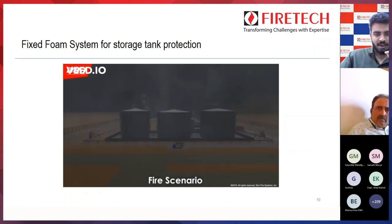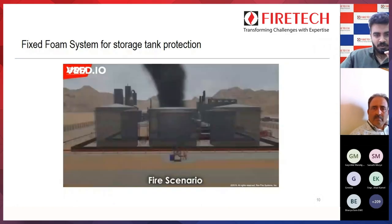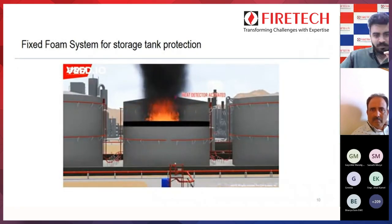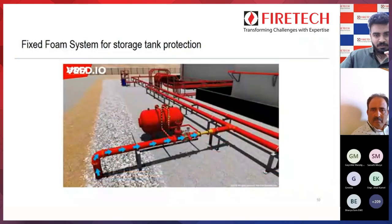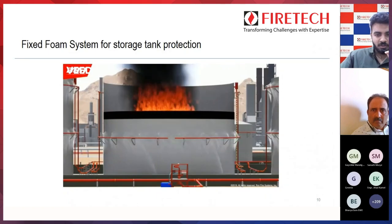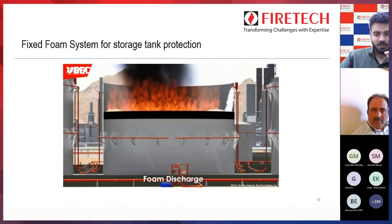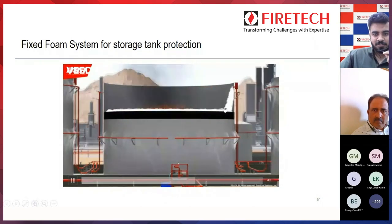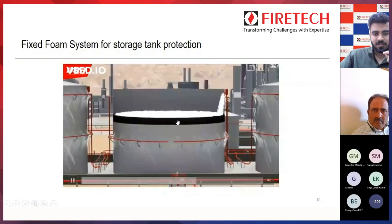This is a fire scenario showing how the systems will actuate one by one. The prior tank will get activated in this case. You can see on the periphery the MV nozzles have been actuated for tank cooling purpose. Your foam chamber has also been actuated — this is a primary protection device — and it is now suppressing the fire.